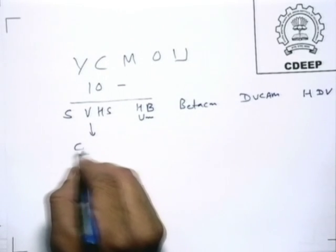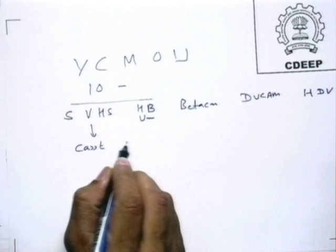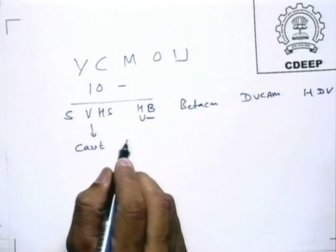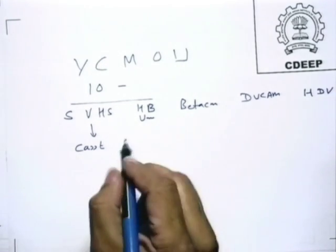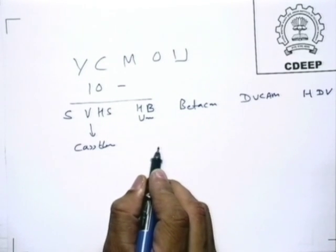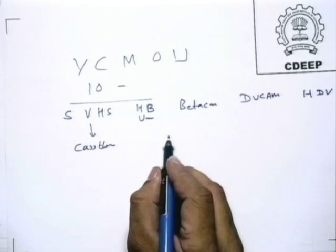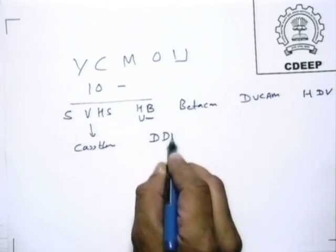Initially we were distributing VHS cassettes to our students. At that time, in 1990, VHS players were more common — CDs were not available then. After that we started showing the programs on Doordarshan Mumbai, because basically we work with Marathi students.